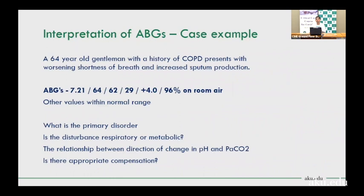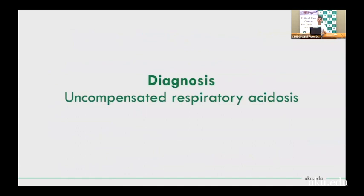Case example two: 64-year-old gentleman with COPD. pH 7.21, PCO2 64, PO2 62, bicarbonate 29, base excess +4. Primary disorder: acidosis (pH below 7.35). Disturbance is respiratory — PCO2 is 64, elevated. pH and PCO2 are moving in opposite directions, confirming respiratory disorder. No appropriate compensation is evident. Diagnosis: uncompensated respiratory acidosis.